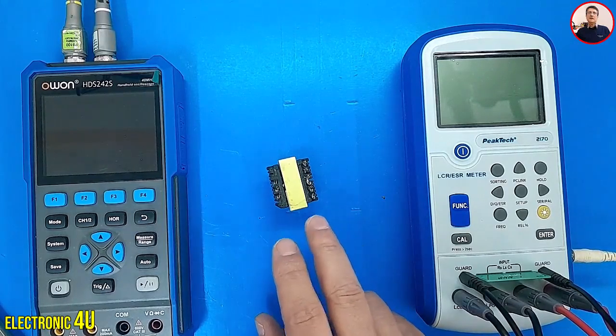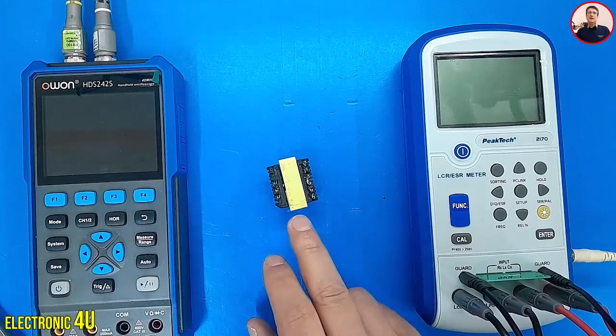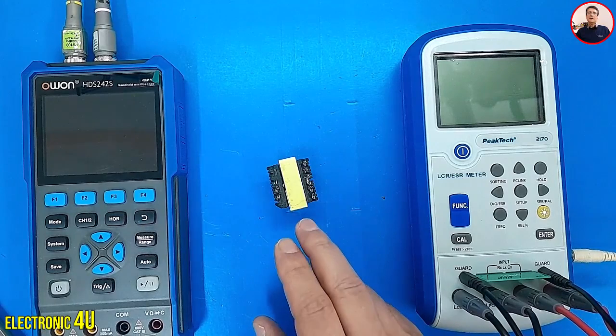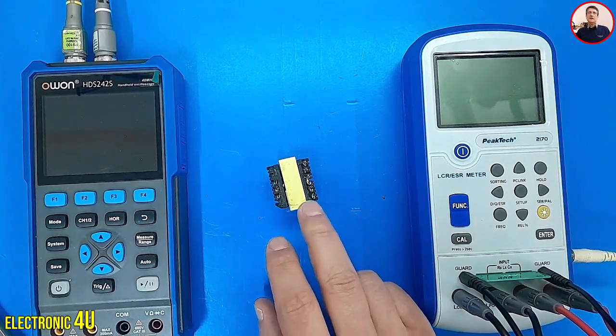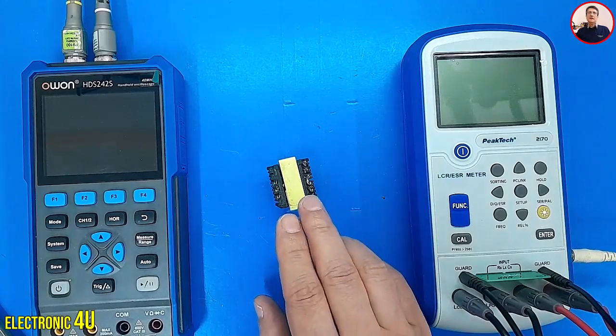The LCR meters inject a sine waveform at a frequency we set into the inductor or transformer. For small inductors or transformers, it's better to use a higher frequency. But what exactly should we check in this transformer?